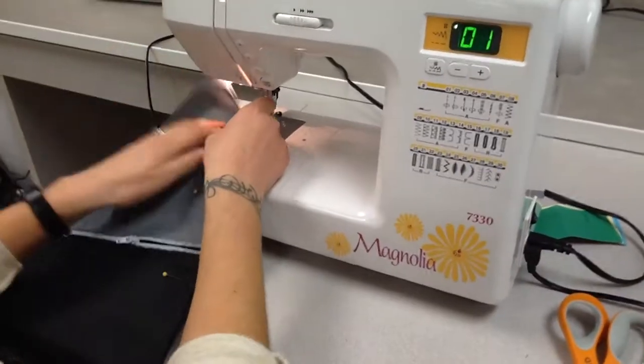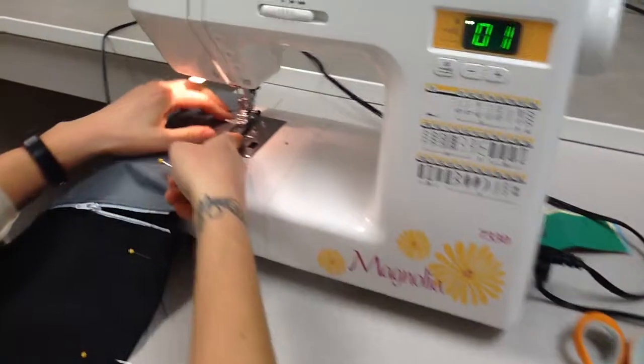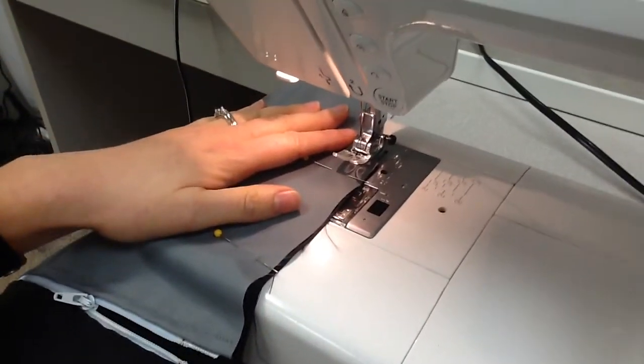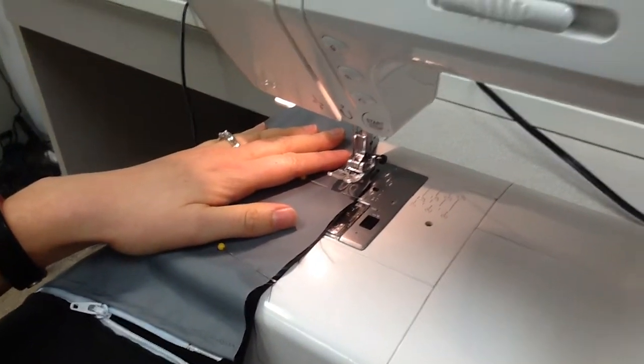So I'm going to start up at the top. Remember I want a quarter of an inch seam allowance and I want to make sure my machine is set for a basting stitch.